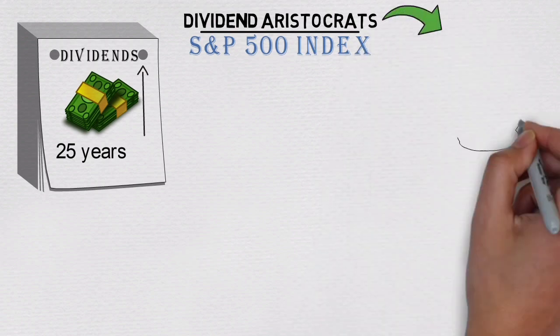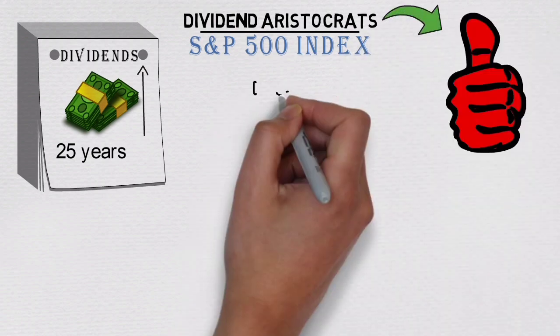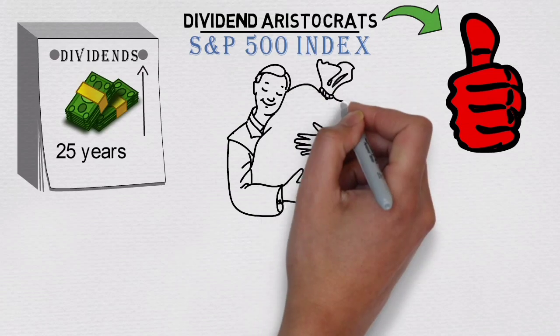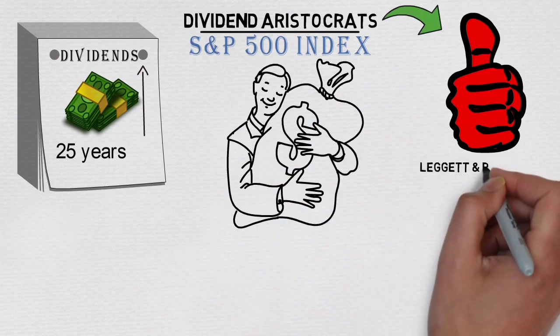That's why dividend aristocrats are considered one of the best options for investors who want to live off of passive income. Few famous aristocrats are 3M,